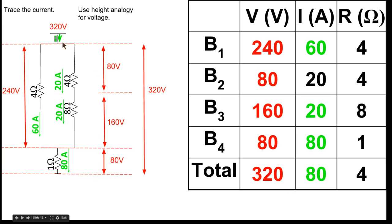So notice we've got 80 amps coming out of the battery. It splits up. 60 amps goes that way. 20 amps goes this way. It recombines here to make 80 amps and then the 80 amps return back up here to the battery.